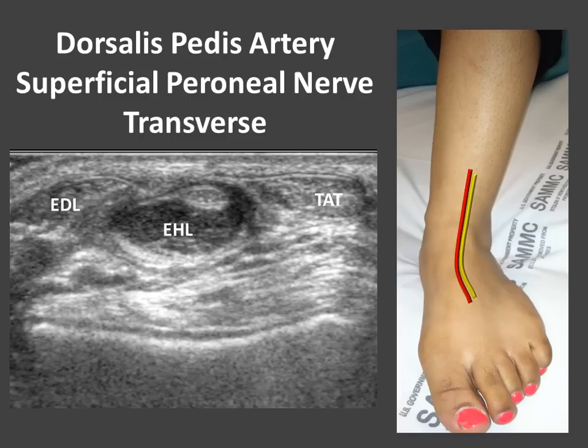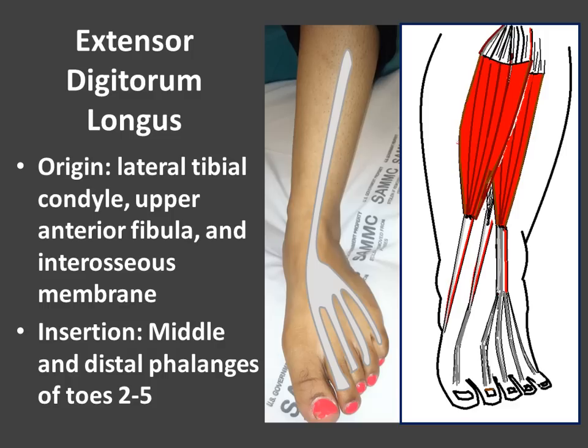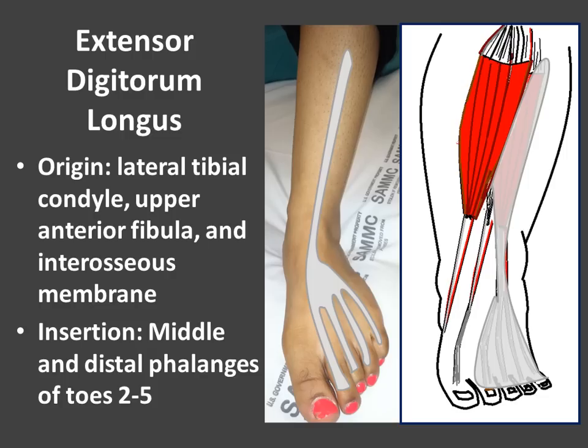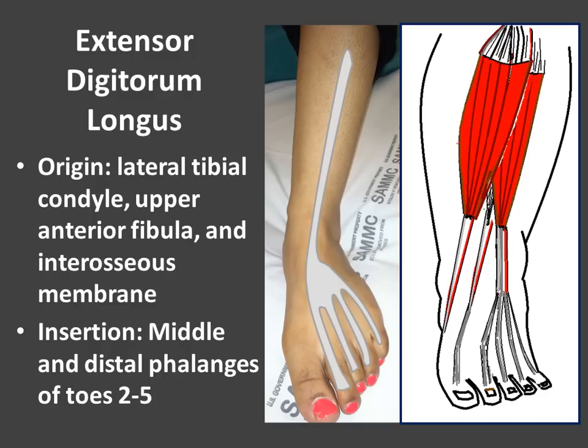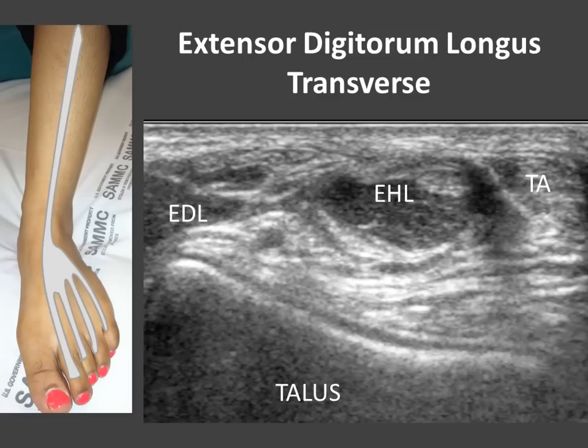Here we can evaluate the neurovascular bundle — the dorsalis pedis artery and the superficial peroneal nerve in transverse. Color Doppler helps in that regard. The last extensor tendon is the extensor digitorum longus, which originates on the lateral tibial condyle, upper fibula, and interosseous membrane, to insert on the middle and distal phalanges of the second to fifth toes.